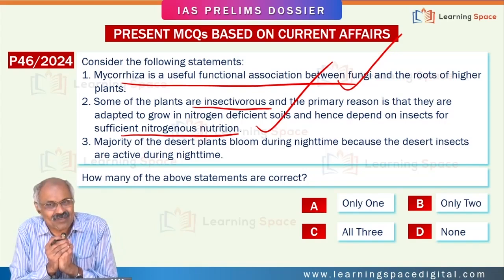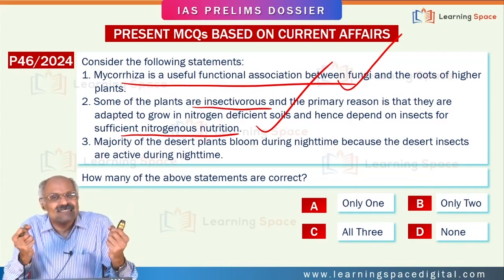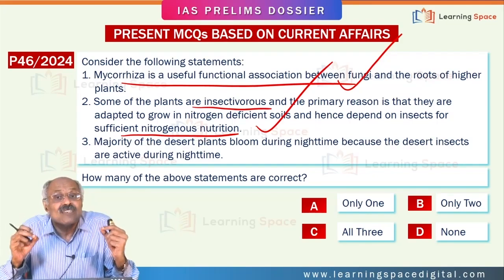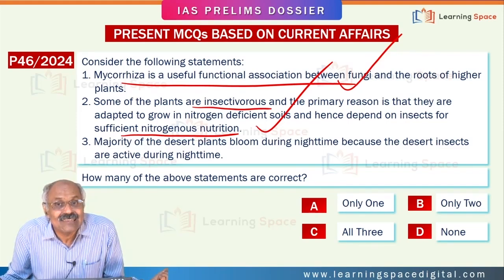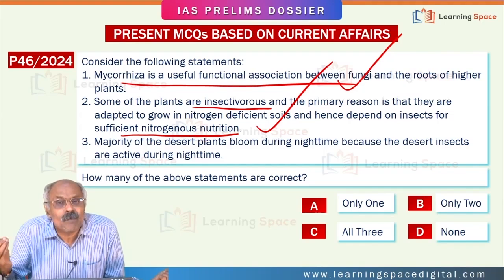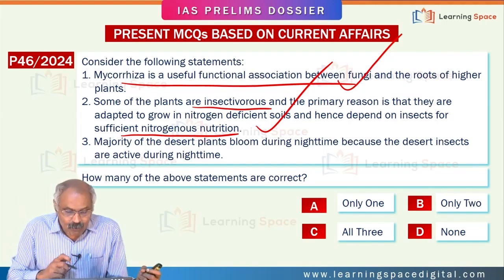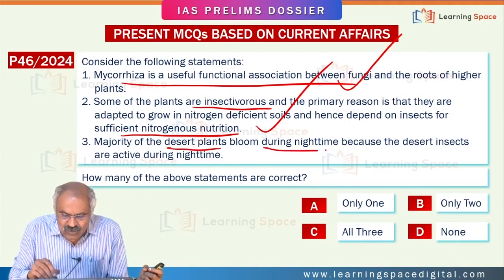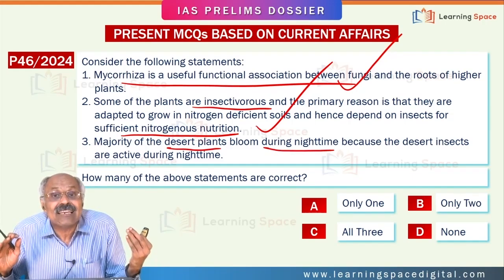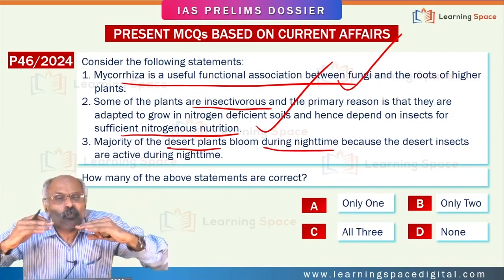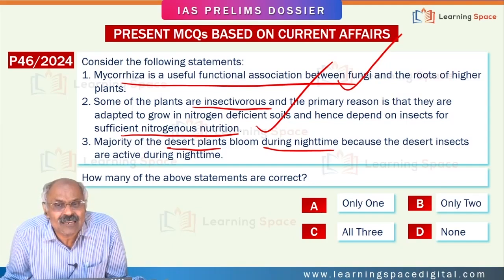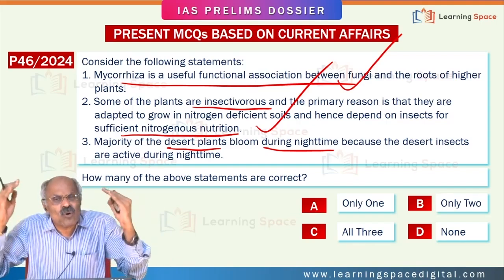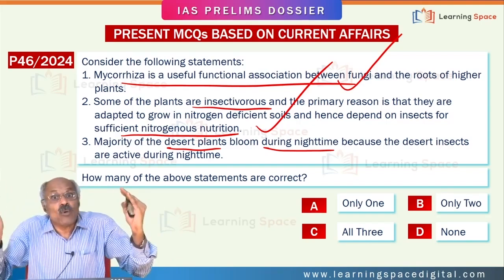Insectivorous plants trap insects to get nitrogenous nutrition, because they are normally grown in areas where soils lack nutrients — waterlogged soils or peat bogs. Majority of the insectivorous plants bloom during night time. During daytime, they close the stomata to prevent evaporation of water, because water is not available that much, so to store and prevent water escape, they close stomata.